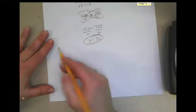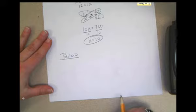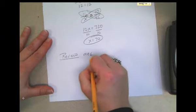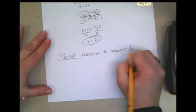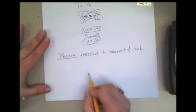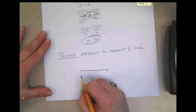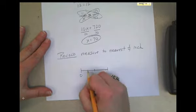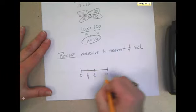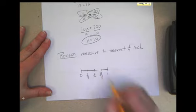The other thing I want to review is to review measuring to the nearest quarter inch. Measure to nearest one-fourth of an inch. So I'm going to start by just drawing a part of a ruler. If this is zero and this is one, of course, halfway between is one-half and halfway between the zero to the half is one-fourth. And then halfway between one-half to one is three-fourths.